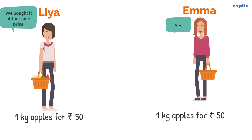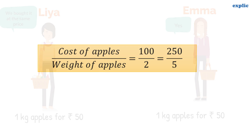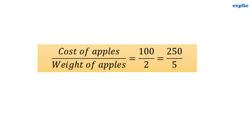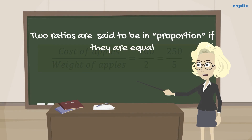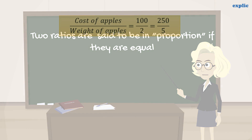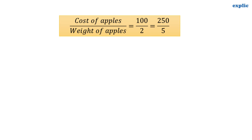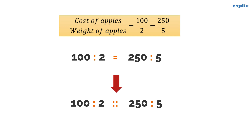That means they both bought the apples at the same price. We can say that the ratios of the cost of apple to the weight of apple are the same. Two ratios are said to be in proportion if they are equal. Here, the cost to the weight of the apples is in proportion. The symbol of proportion is a double colon.